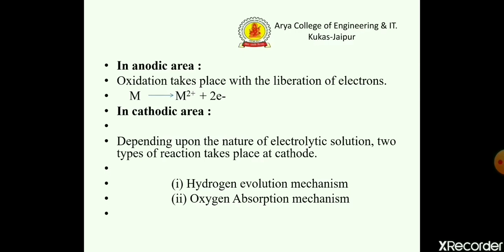The reaction at the anode is: metal → metal ion + 2 electrons. In the cathodic area, a reduction reaction will take place, and these reactions depend upon the nature of the electrolyte solution. In the cathodic area, two types of reactions take place depending upon the environment: the first is the hydrogen evolution mechanism, and the second is the oxygen absorption mechanism.